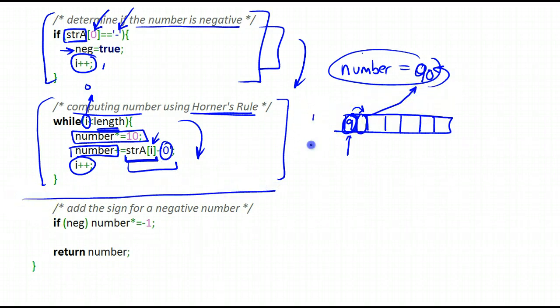At this point we know once we've been through this loop we know that we have our result and all we have to do is in case it was a negative number, so I examine my flag, if it was negative then all I'm going to do is multiply my number result by minus 1 and return that number as the integer equivalent of the string that was passed to us.